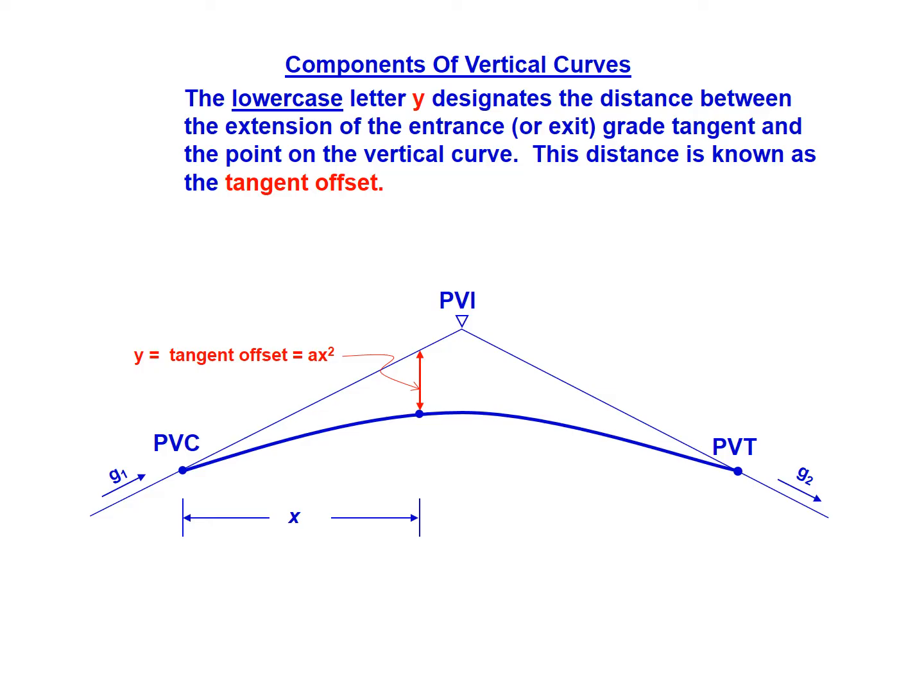Breaking that down a little bit more, looking at some of these components of vertical curves, the lowercase letter y is the distance between the extension of the entrance grade, or if you're on the other side of the PVI, the exit grade, and the point on the vertical curve. This is that distance between the tangent, or the grade, and the vertical curve. This is known as the tangent offset, and it's represented by the equation AX squared.